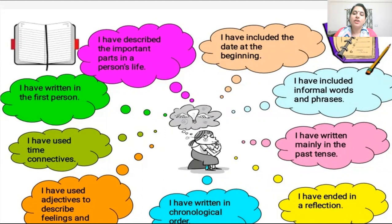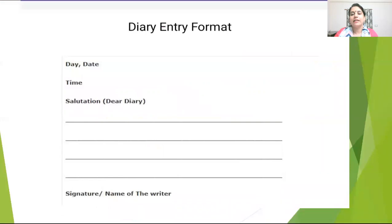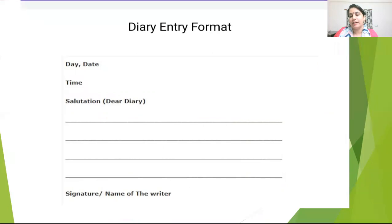A Diary Entry is a short composition. Though it is written in informal language, it still follows a certain format. The Diary Entry is always written in first person. It usually begins with date and day, which appear in the top left corner. It may begin with an interjected sentence or comment on the day, such as 'I am not feeling very excited today.' Ideas must be expressed in well-thought-out paragraphs.